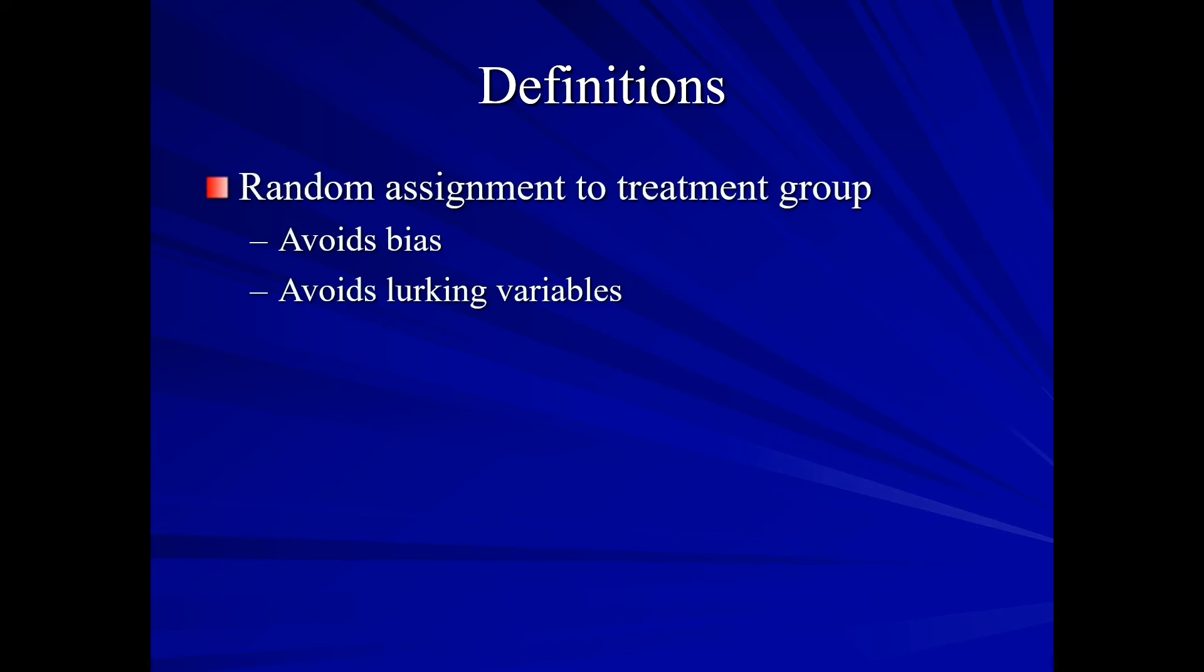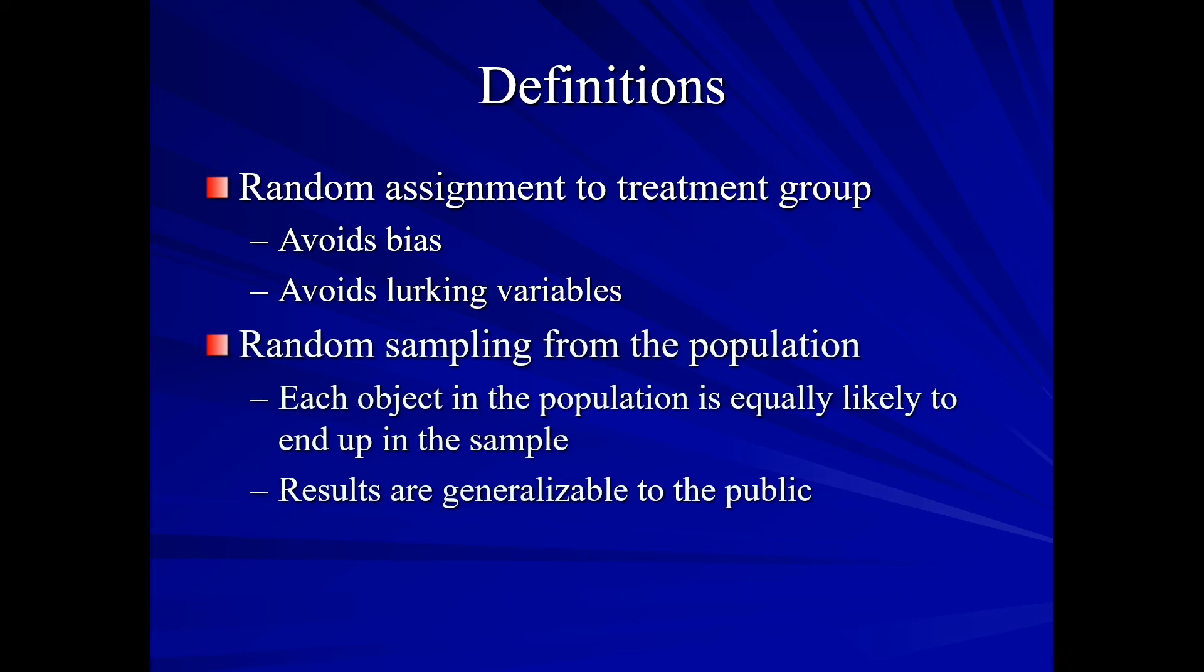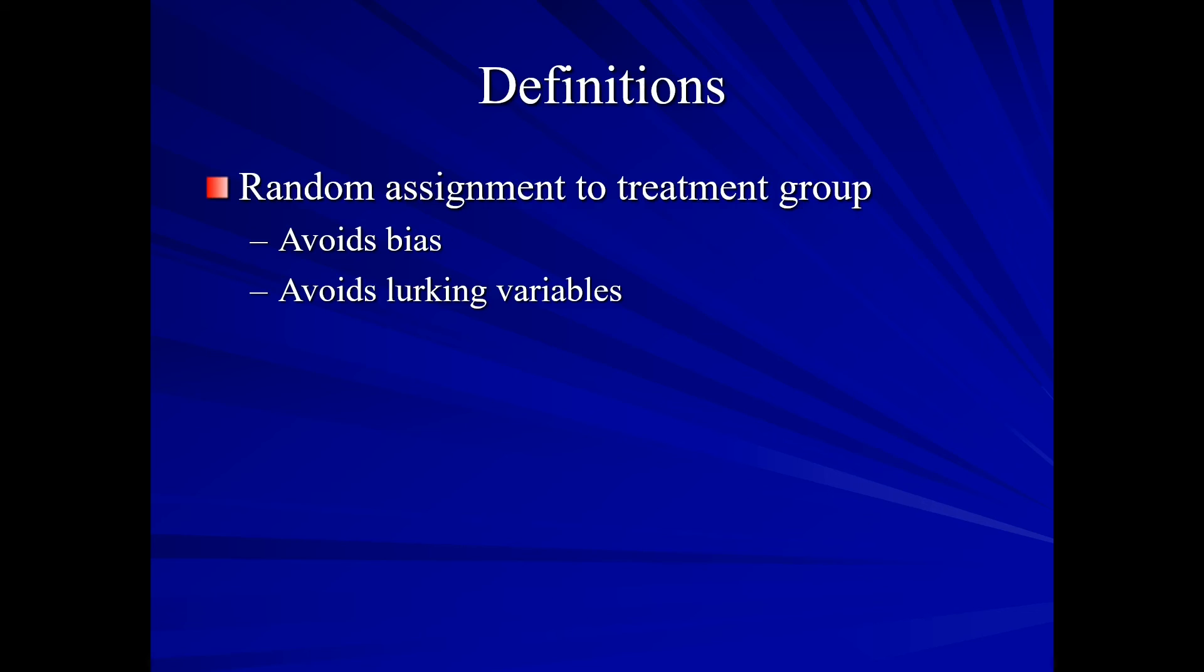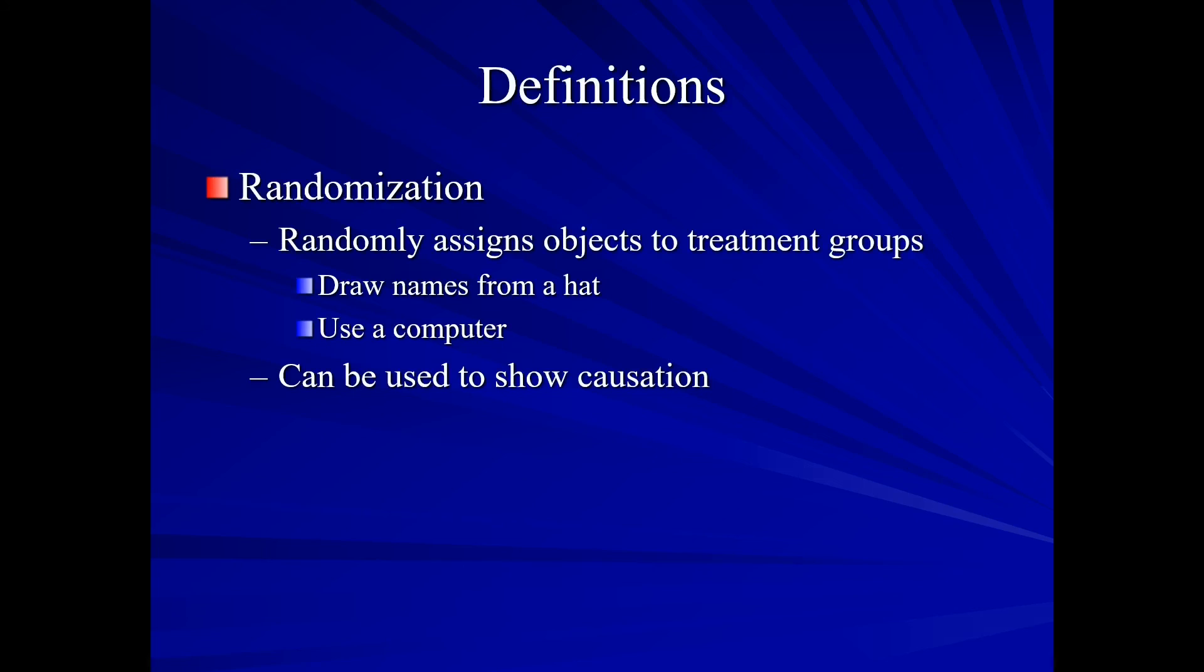Now one thing that we do like to do. Random assignment to treatment groups. This avoids bias. This also avoids lurking variables. Also random sampling from the population is necessary. Each object in the population needs to be equally likely to end up in the sample. This allows results to be generalizable to the public. And at the end of this video I will show an example in R. Our randomization can be done in several ways. One type of way we could simply draw names from a hat, but if we have a large sample that would be rather cumbersome. We could use a random number generator table, but again if we have a large number of samples that's rather cumbersome. We could use a computer, and this is a little less cumbersome. Now this randomization can then be used to show causation.